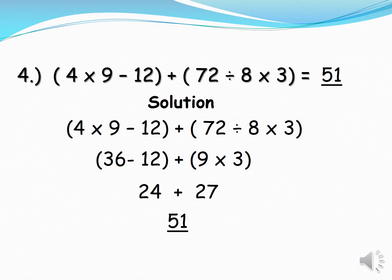Example 4: (4×9−12)+(72÷8×3)=51. Solution: 4×9=36, then 36−12=24. 72÷8=9, then 9×3=27. Then 24+27=51.